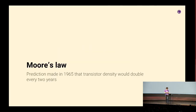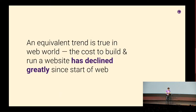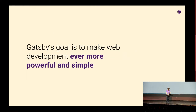Switching topics a little bit — Moore's Law. Probably everyone here is familiar with it. It was a prediction made in 1965 that transistor density would double every two years, made by one of the Intel founders. Remarkably, Intel was able to pull off doubling transistor density for something like 40 years, and pretty much all of modern society is due to that feat. An equivalent trend is true in the web world: the cost to build and run a website has declined precipitously since the start of the web. One of our goals is to keep that trend going.